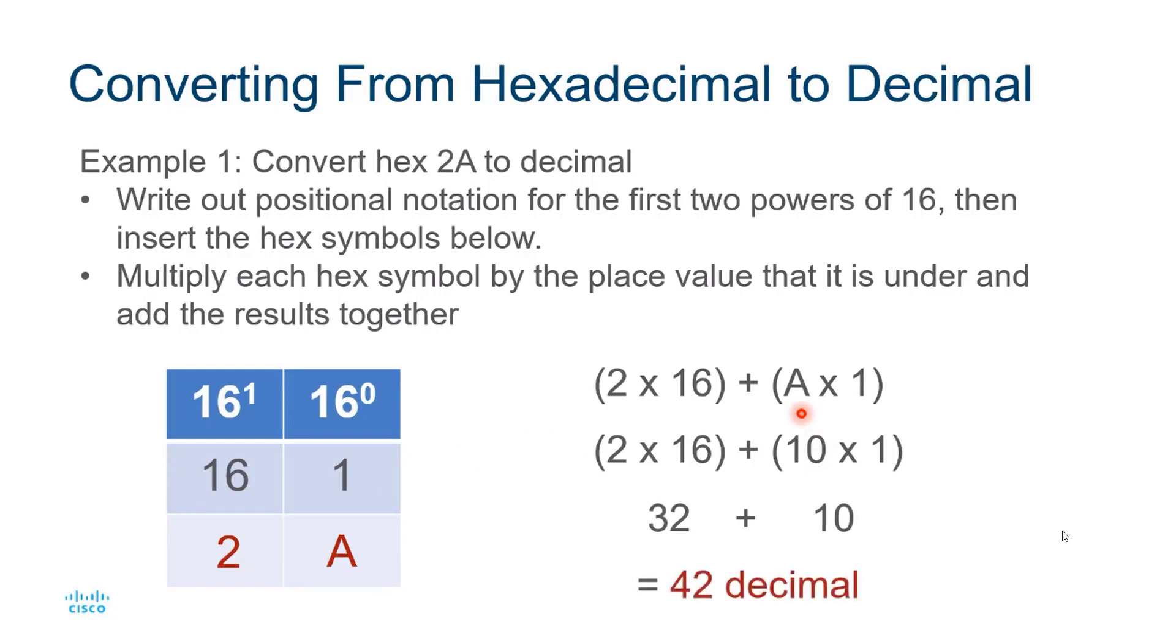Multiplying or dividing by 16 isn't always easy when doing hex to decimal conversions. Usually, it's easier to convert the hexadecimal or decimal value to binary first, then convert the binary number to decimal or hexadecimal.